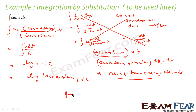You can memorize this because it is very difficult to think on the spot that you have to multiply with sec x + tan x. This is a special case — memorize it for sec x and cosec x.